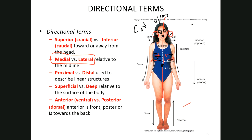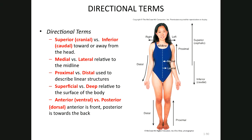The other term that sometimes causes problems is proximal and distal. Proximal and distal are used to describe the position of a structure in regards to the trunk of the body. Something proximal is close to the trunk; something distal is far away from the trunk.